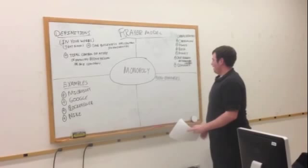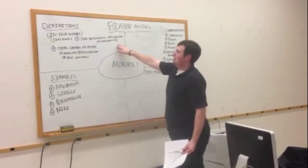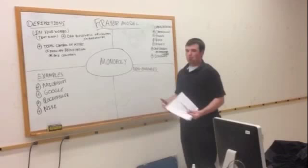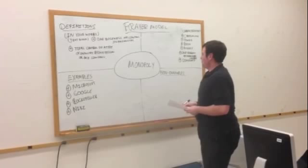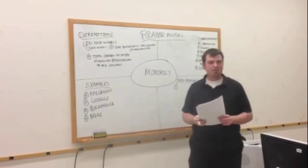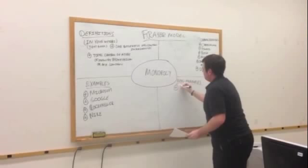Alright. And our last portion of the Frayer model. So we know what the definition of a monopoly is. We know what the characteristics are. We know some examples of it. Now let's get some non-examples. So what a monopoly isn't, per se. So based off what we know so far, who can tell me what isn't a monopoly? Or what does a monopoly not represent? Let's start with you, Jennifer. What do you got?